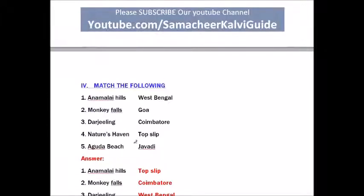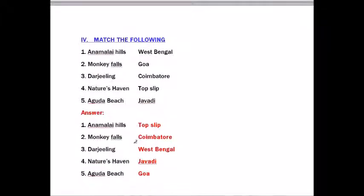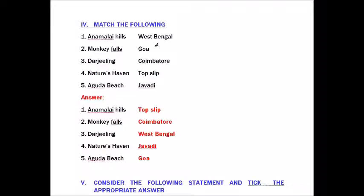Roman number four: Match the following. Anamalai Hills — Top Slip; West Bengal — Darjeeling; Monkey Falls — Coimbatore; Nature's Heaven — Goa (Aguada Beach); Javadi Hills also listed. Answers: Anamalai Hills–Top Slip, Monkey Falls–Coimbatore, Darjeeling–West Bengal, Goa–Aguada Beach.